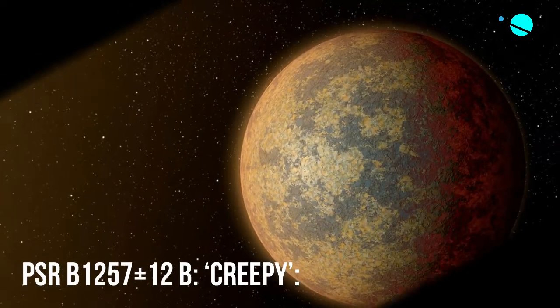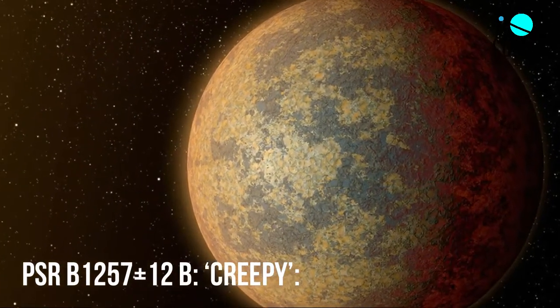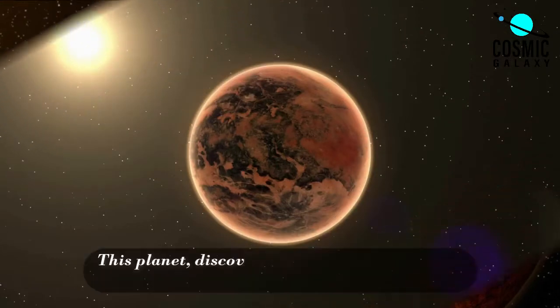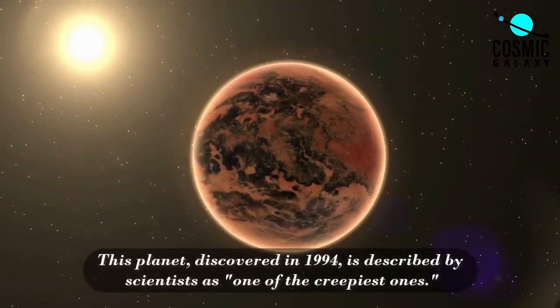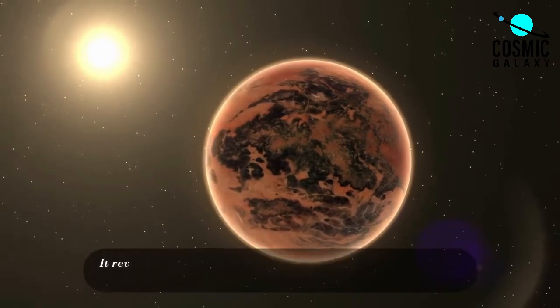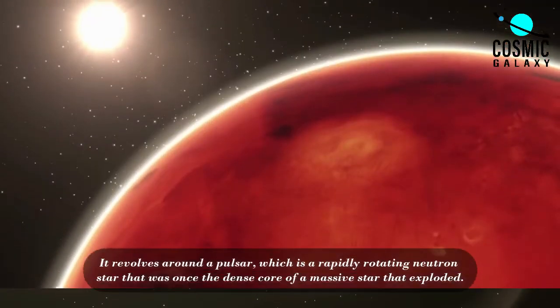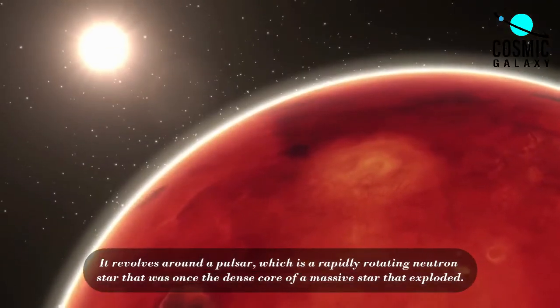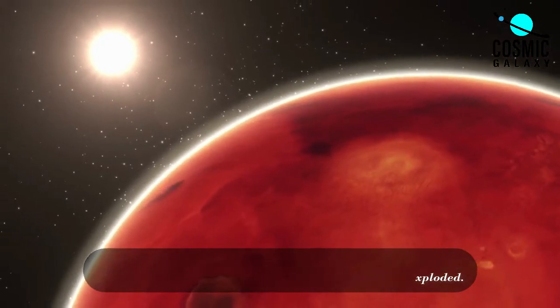Number 5, PSR B12-57-12b, Creepy. This planet, discovered in 1994, is described by scientists as one of the creepiest ones. It revolves around a pulsar, which is a rapidly rotating neutron star that was once the dense core of a massive star that exploded.